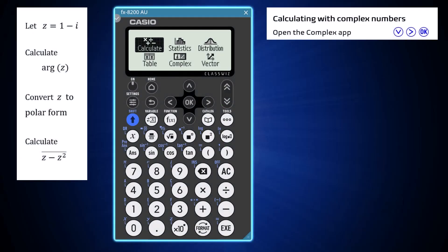Using the Complex app of a Casio FX8200AU, a range of complex number calculations can be performed, including calculations involving the argument and conjugate of complex numbers, and conversions between complex numbers in different forms.